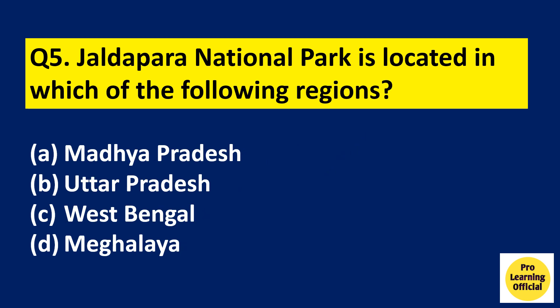Question number 5: Jaldapara National Park is located in which of the following regions? Option A: Madhya Pradesh. Option B: Uttar Pradesh. Option C: West Bengal. Option D: Meghalaya. The right answer is Option C, West Bengal. Jaldapara National Park is located in West Bengal.